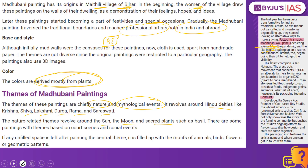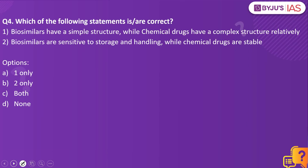Now let's look into the next practice question. Which of the following statements is or are correct? Biosimilars have a simple structure while chemical drugs have a complex structure relatively. Biosimilars are sensitive to storage and handling while chemical drugs are stable. Which of the statements are correct? The answer to this is 2 only.